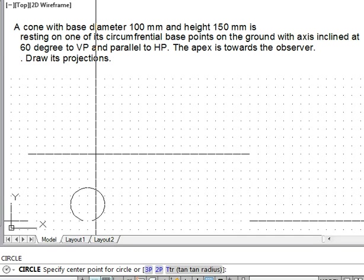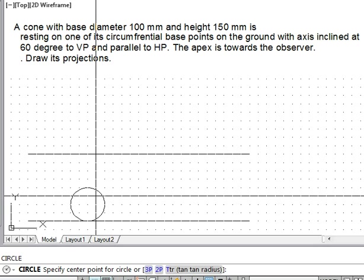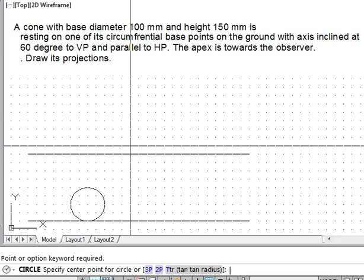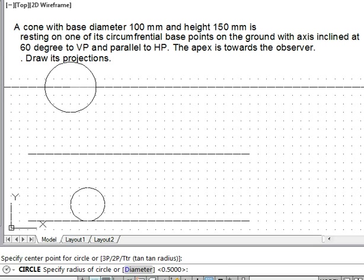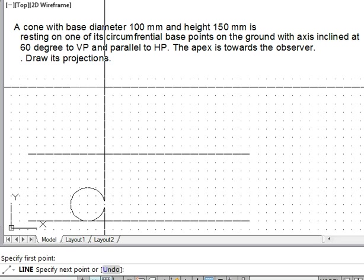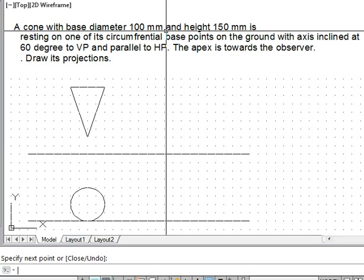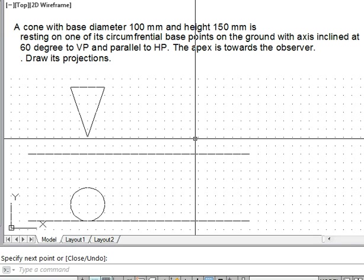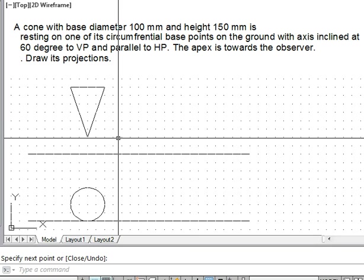It is lying on the base circumferential base point, so the apex is towards the observer. That means it is visible. So we shall have the base of the cone like this and its apex is somewhere here towards the observer, towards the front view itself. This is how it will appear.